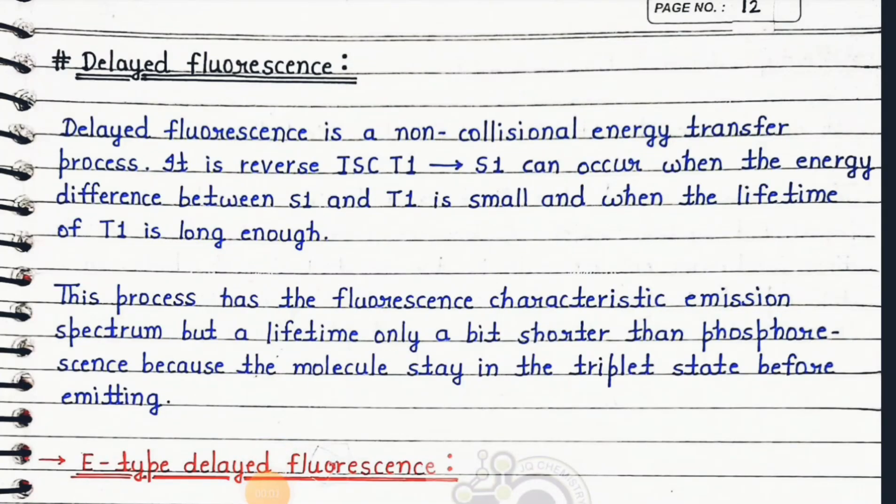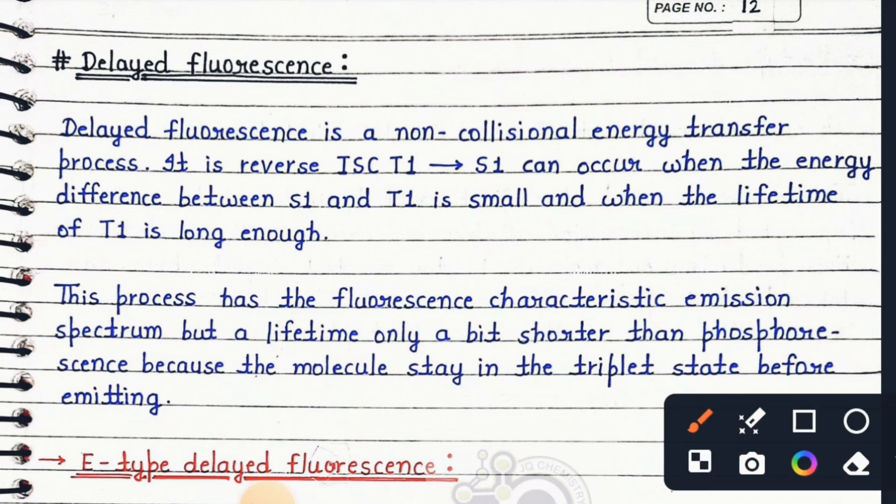Hello everyone, in this class we are going to start delayed fluorescence. What is delayed fluorescence? Delayed fluorescence is a non-collisional energy transfer process. It is reverse inter-system crossing. The transition from singlet first state to triplet first state may occur when the energy difference between S1 and T1 is small and when the lifetime of T1 is long enough.